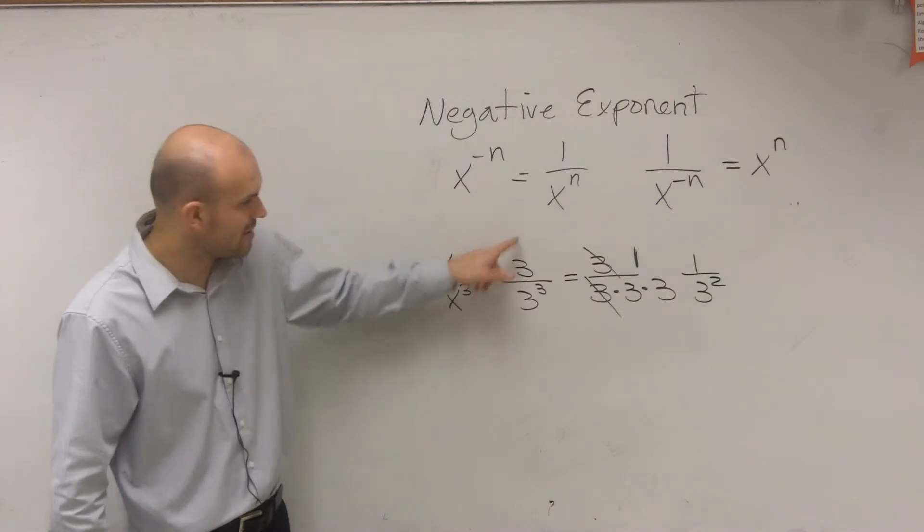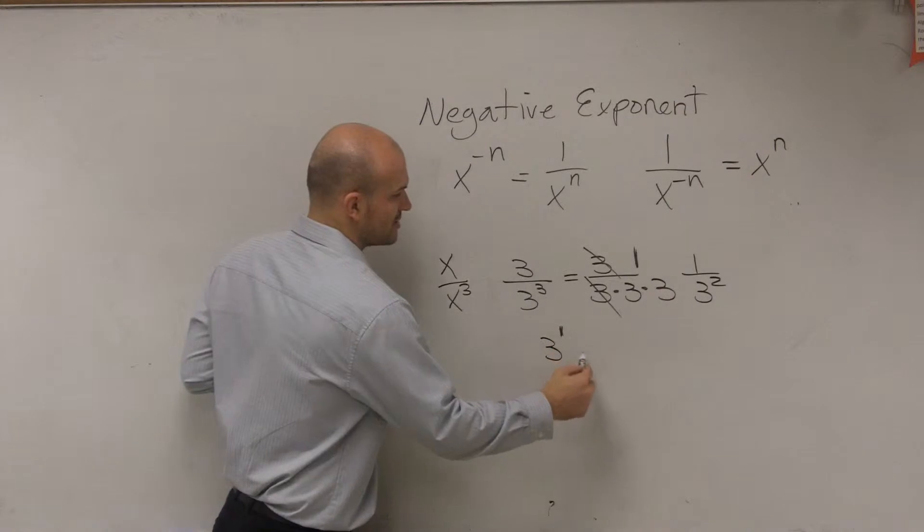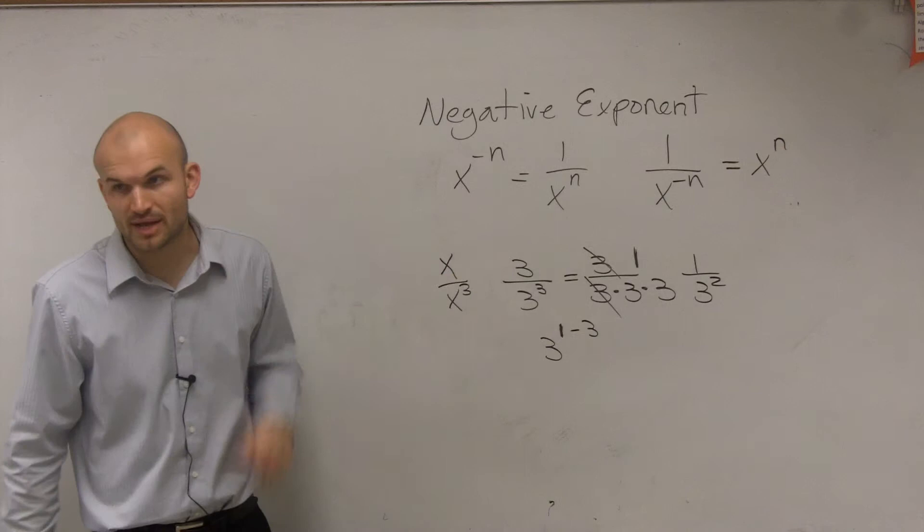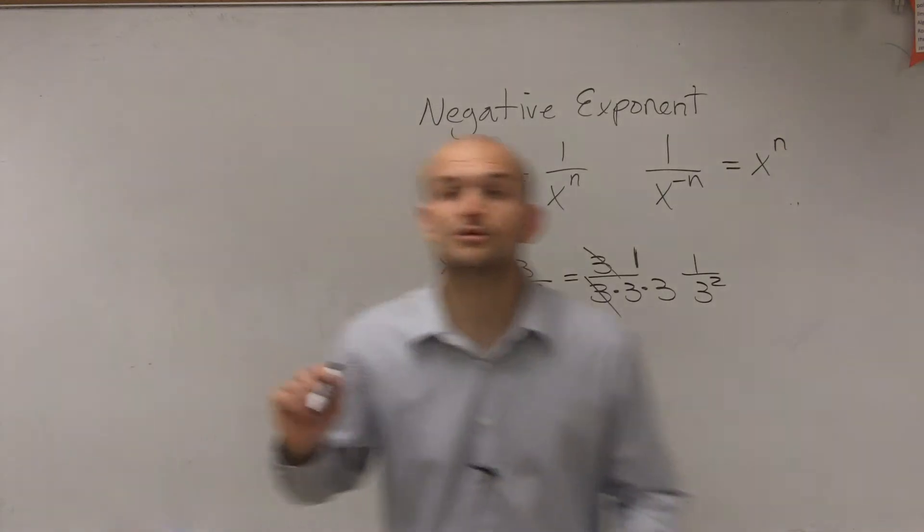Because let's take a look at it. If I was going to follow the quotient rule, that would be what? 3 to the first minus 3, right? If you were to apply the quotient rule,